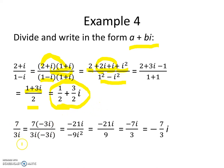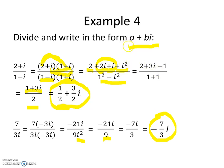The next one is 7 divided by 3i. We multiply both numerator and denominator by negative 3i. The numerator becomes negative 21i, and the denominator becomes negative 9 times i squared. Since i squared is negative 1, negative 1 times negative 9 gives 9. Simplifying, negative 21 over 9 reduces to negative 7 thirds, so written in bi form the answer is negative seven-thirds i. There is no real part, so we just have the bi term.